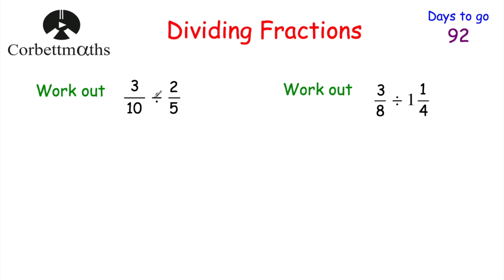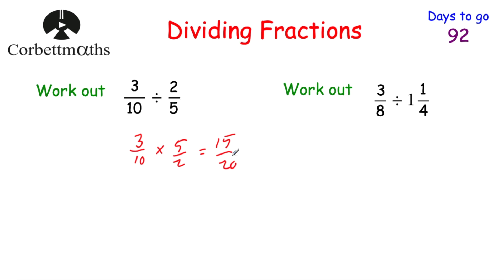So if we had 3 tenths divided by 2 fifths, we're going to do 3 tenths multiplied by 5 halves — just flipping over the second fraction and multiplying by that reciprocal. So 3 times 5 is equal to 15, and 10 times 2 is equal to 20. So 3 tenths divided by 2 fifths would be 15 twentieths. This can be cancelled down — both numbers are divisible by 5, so 15 divided by 5 is 3, and 20 divided by 5 is 4. So that's 3 quarters.